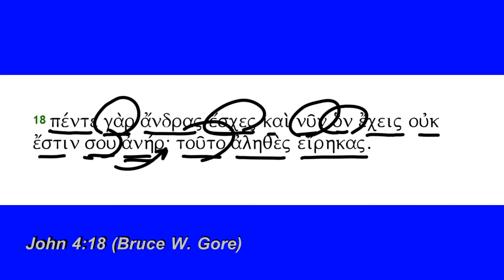So Jesus commends her for being truthful about saying that she doesn't have a husband, but at the same time there's a little bit of bite in this comment, because he points out to her — based on his supernatural insight, at least that's the way John wants us to take it — that he knows she has had five husbands, and now she's simply living with a man, which would be contrary to Jewish law and generally viewed as a less than appropriate way to live. Jesus is kind of opening a wound here, but access to that living water presupposes a moment in which one faces the music, faces the need, the brokenness of one's own life — and that is what Jesus is gently accomplishing in this conversation.